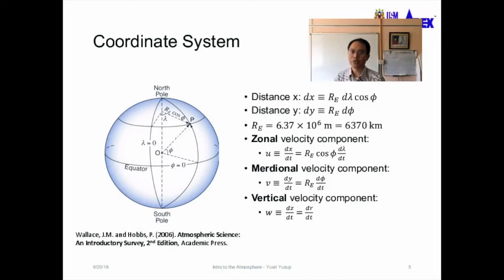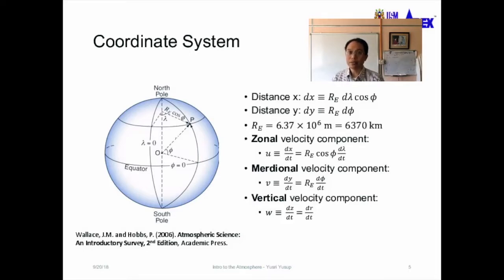The approximate radius of the Earth, RE, is 6.37 times 10 to the power of 6 meters, or approximately 6370 kilometers. We can calculate the horizontal distance between two points, DX, using the equation: RE times the difference in lambda (longitude in radians) multiplied by cosine of the latitude, cos phi.